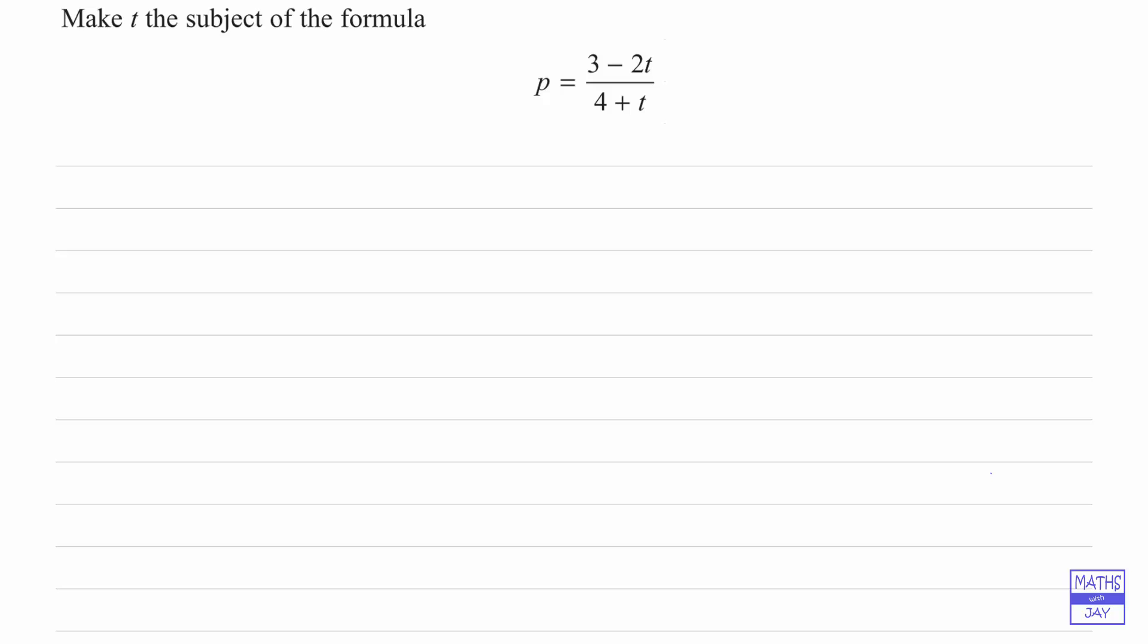The tricky thing about it is that the thing we're going to make the subject, t, appears in two places. So what we've got to aim to do is to get any expressions in t on one side and any expressions in anything else on the other side.